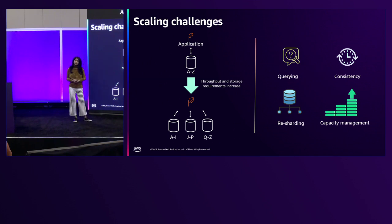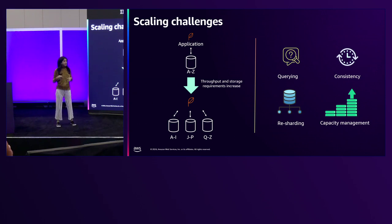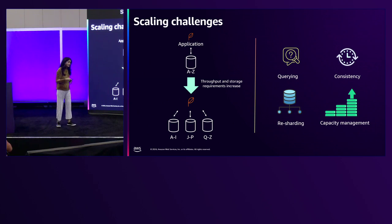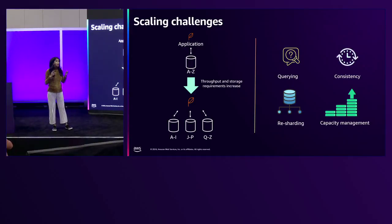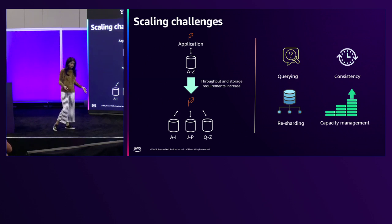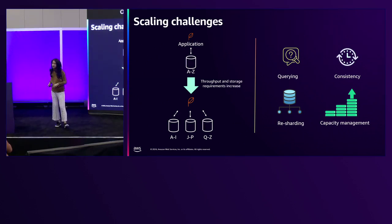Another problem is capacity management. You have to figure out where in your system you're seeing heat and then fail over to a bigger or smaller instance size. What you end up doing is just over-provisioning everything. So you have two problems: not just operational complexity, but you're also spending a lot of money because you're over-provisioning your entire system.